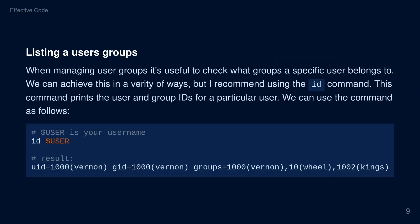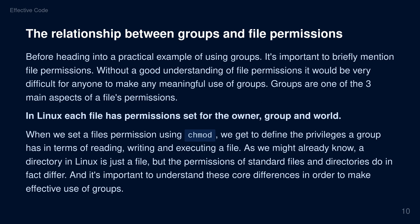The relationship between groups and file permissions. Before heading into a practical example of using groups, it's important to briefly mention file permissions. Without a good understanding of file permissions, it would be very difficult to make any meaningful use of groups. Groups are one of the three main aspects of file permissions. In Linux, each file has permissions set for the owner, group, and world. When we set a file's permissions using chmod, we get to define the privileges a group has in terms of reading, writing, and executing a file. A directory in Linux is just a file, but the permissions of standard files and directories do in fact differ, and it's important to understand these core differences in order to make effective use of groups.